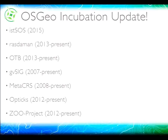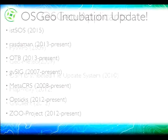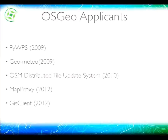Here are current OSGEO incubation projects — from the newest, ISTSOS (a sensor observation service that joined incubation last week), to GVSIG which entered incubation in 2007. We also have projects like PyWPS and GeoMetro that applied to join OSGEO in 2009 and are still waiting for a mentor willing to welcome them into the organization.